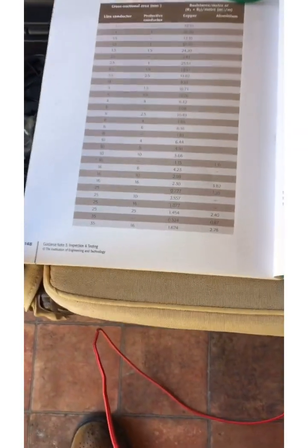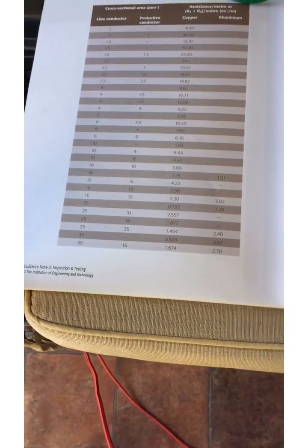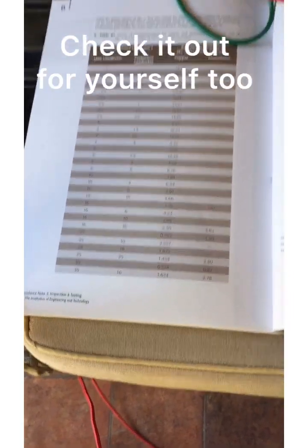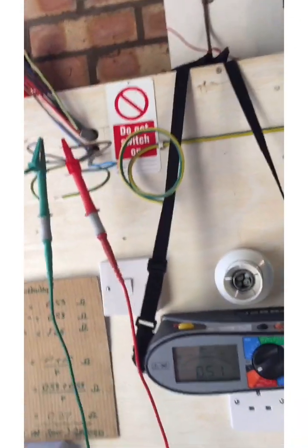If we look in guidance note 3, and we look at the tables, the milliampere meter values for different cross-sectional areas, we'll see that that corresponds to approximately 70, 80 meters or thereabouts without being too precise about it.